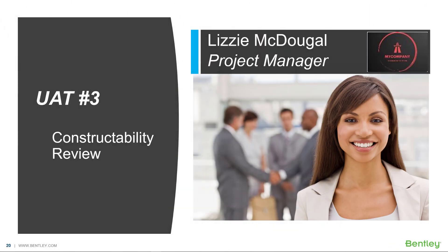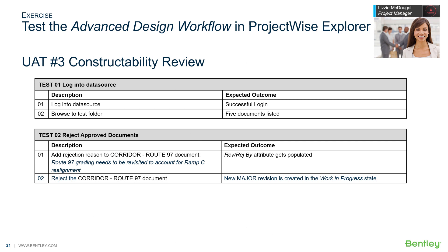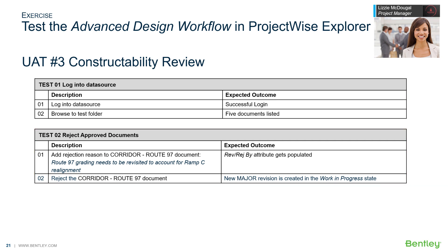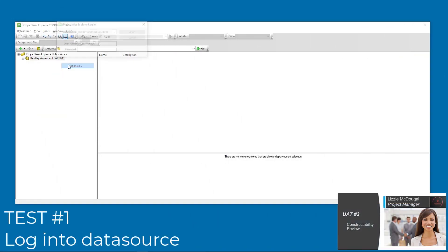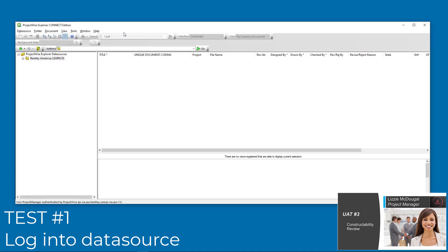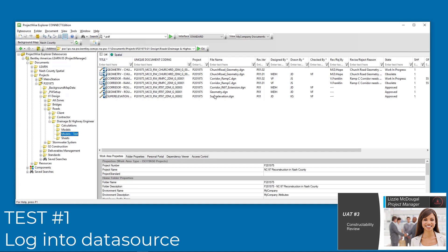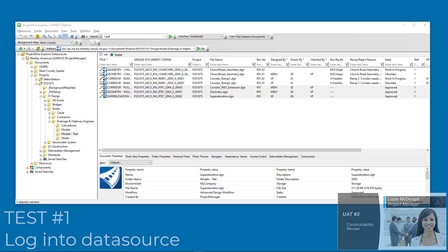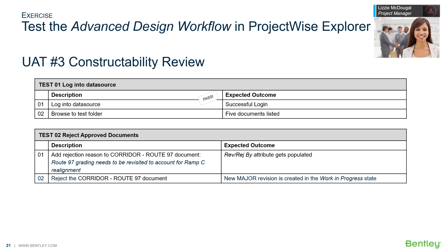We can now execute the constructability review UAT. Lizzie McDougall is the project manager for the P-2019-75 highway project and will test the constructability review for us. Lizzie will perform two tests: Test 1, log into the data source; and Test 2, reject an approved document. For Test 1, Lizzie logs into the data source and browses to the test folder. She then reviews each document in the approved state in the appropriate application, such as OpenBridge Designer, OpenRoads Designer, or from a design review session in the project's iModel. Test 1 passes.